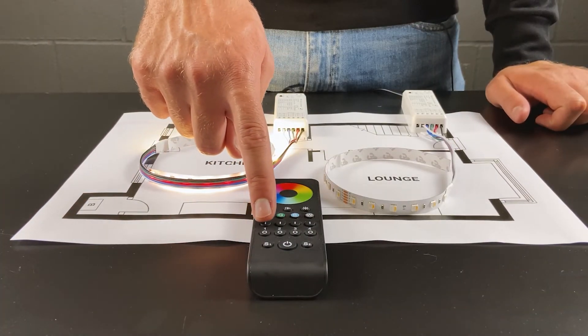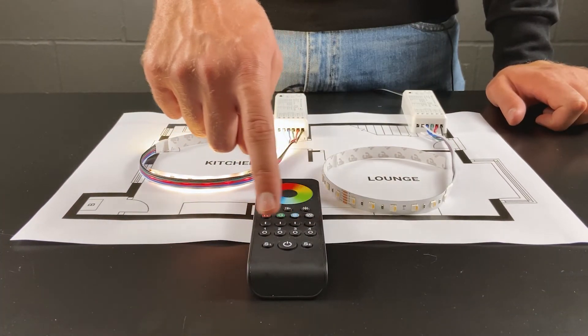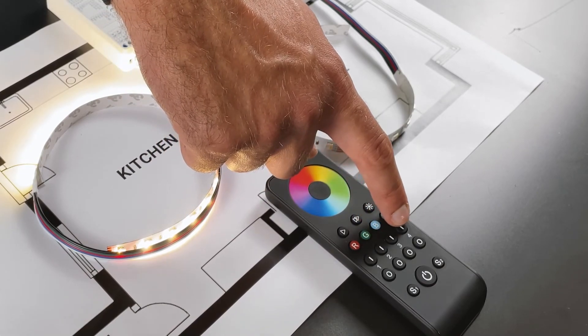It is worth noting that for each individual zone on the remote, the top buttons are the on buttons and the bottom are the off.